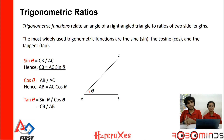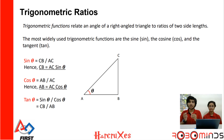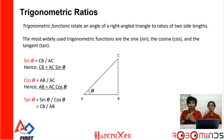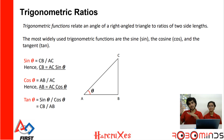Before we move on to vectors, one thing we need to learn is trigonometric ratios. There are three functions you can use. These functions take an angle of a right triangle as input and give you the ratio between two sides. Sin gives you the ratio of the opposite side to the hypotenuse. Cos gives you the ratio of the adjacent side to the hypotenuse. Tan gives you the ratio of the opposite side to the adjacent side. It is important to note that this only works with 90-degree triangles.